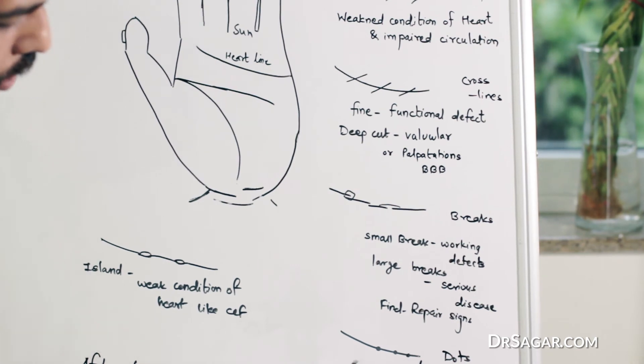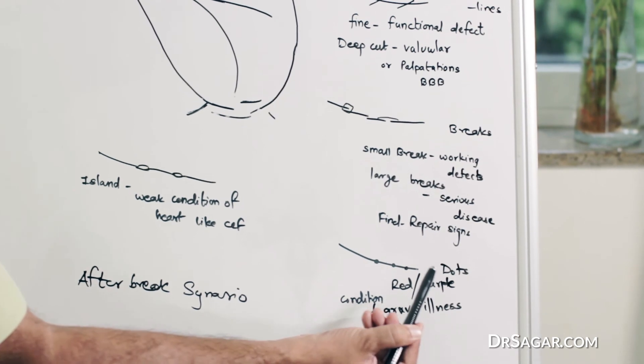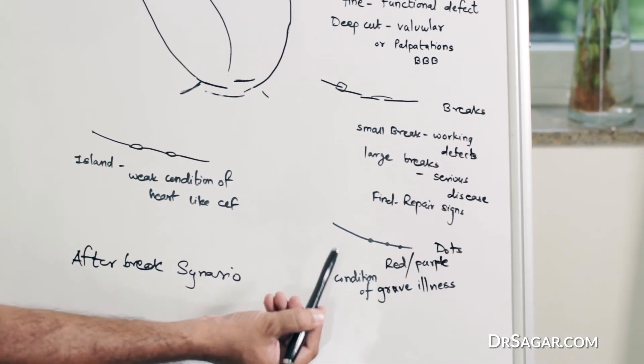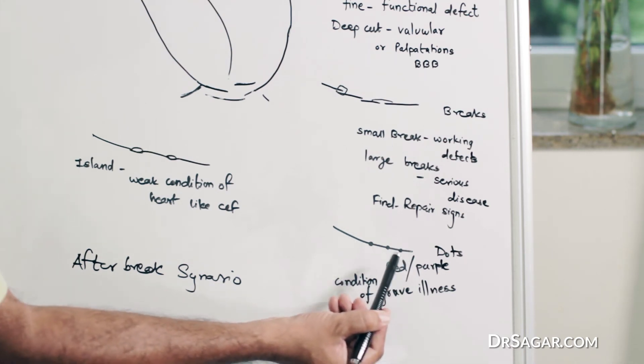Then, dots. Dots are holes, nothing but holes on the heart line. If they are red or purple in color, the condition of the heart is very dangerous. So, be aware of dots.